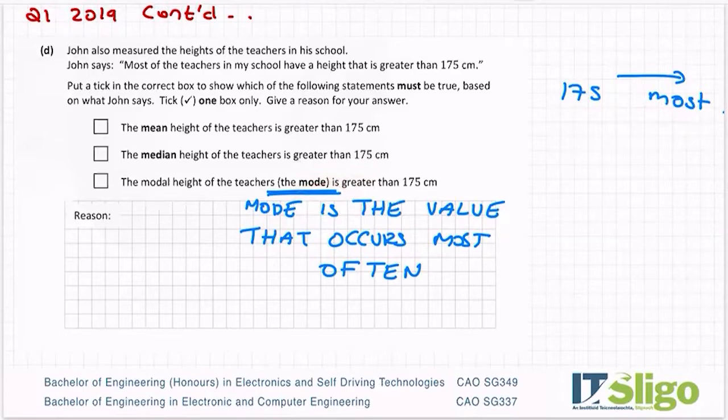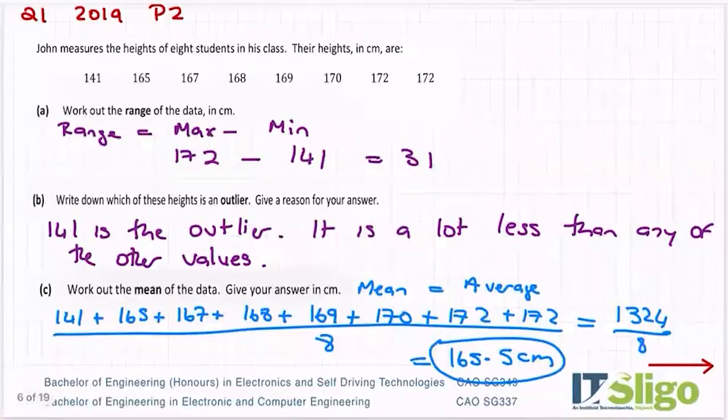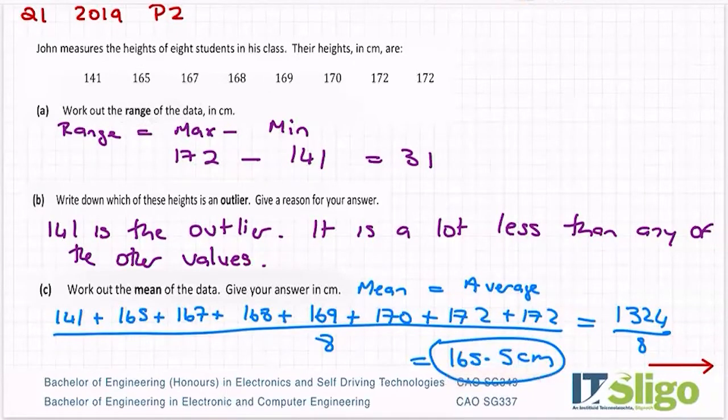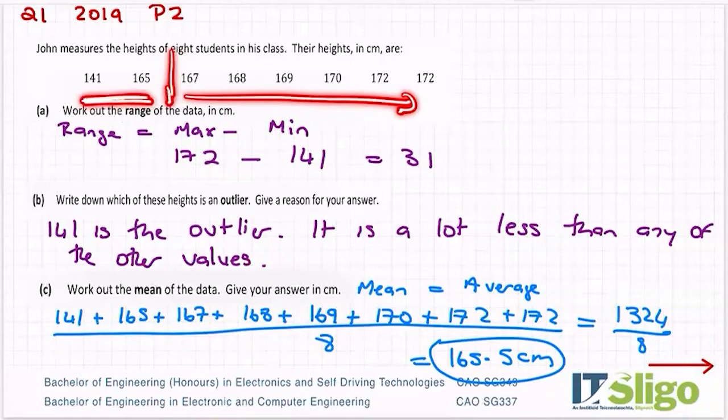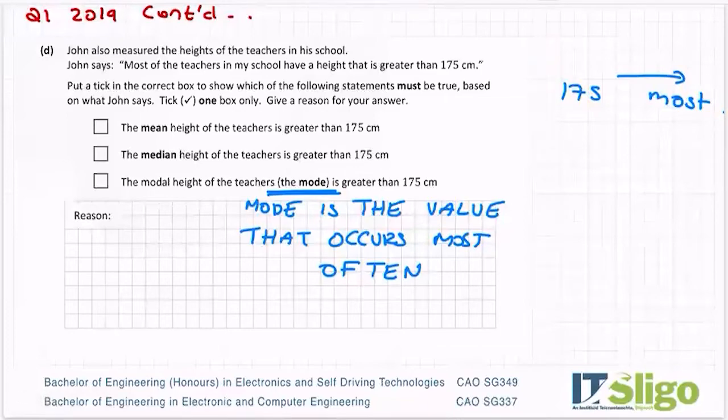Now, the mean height of the teachers is greater than 175. Again, I can't say this one for sure. And the reason for that goes back to here. Look at how the effects that 141 had on my data. It almost pulled it below these values here. So if we were saying, if I said to you, most of the students is above 167, I would be correct. But is the mean above 167? So even though there's only two students less than 167, because this one is so low, it's pulling my mean really low. So if there happens to be a teacher down in this side that's really small, it's going to pull my mean down this way. So it may not necessarily be greater than 175.